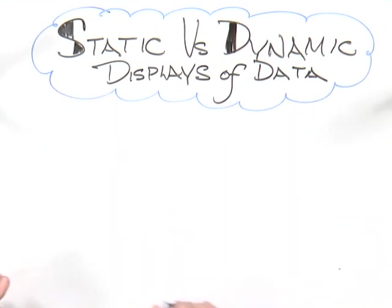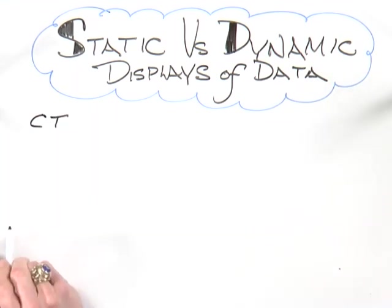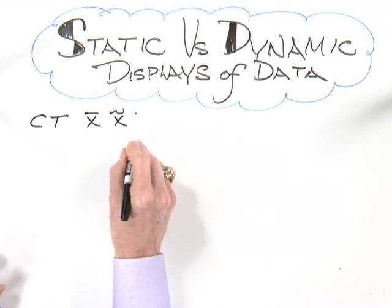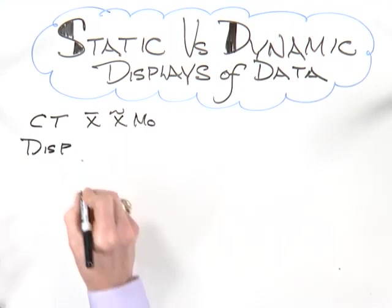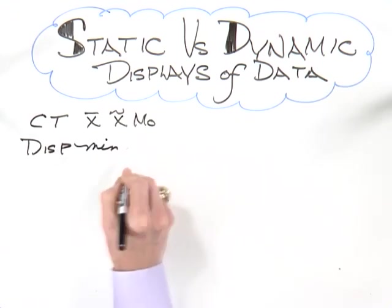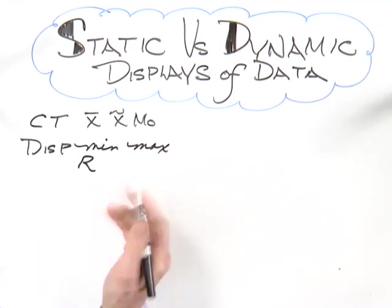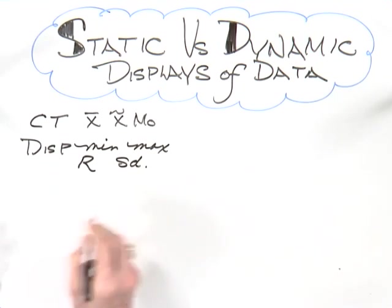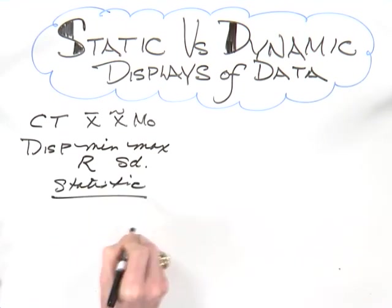If you've had any course in basic statistics, you know that there are measures of central tendency — the mean, the median, and the mode — and there are measures of dispersion, characterized by the min, the max, the range (which is the difference between the min and the max), the absolute difference, and finally the standard deviation. These are all statistics trying to capture some static aspect of a distribution of data.